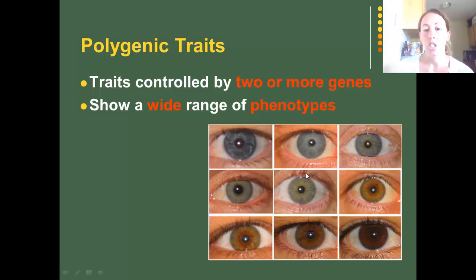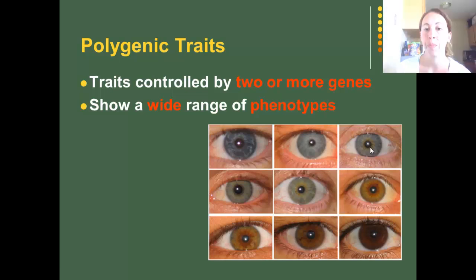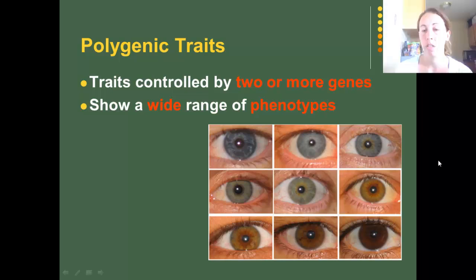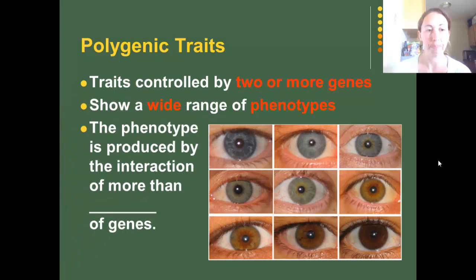Your eye color is actually controlled by more than just two genes, which is why there's such a wide range of colors in a human eye. For example, in this eye right here, you can see more greenish on the outside and it turns browner towards the pupil, because it's controlled by more than two genes. The phenotype is produced by the interaction of more than one pair of genes.